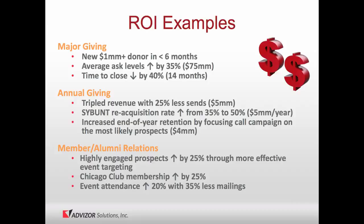In major giving, clients who have used data to find prospects not previously assigned — getting them into the cultivation pipeline — have found million-dollar donors rapidly. By using data and analytics to manage the major giving team, we've been able to get average ask levels up by 35%, worth $30–75 million to one client. For example, a million-dollar ask on the table for someone with a $25 million-plus capacity rating who's already given $8 million — that ask should be more like $10–15 million, perhaps a naming opportunity.